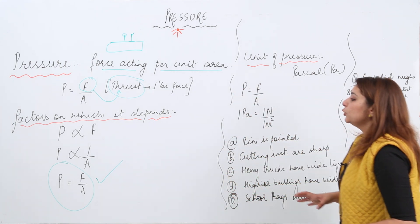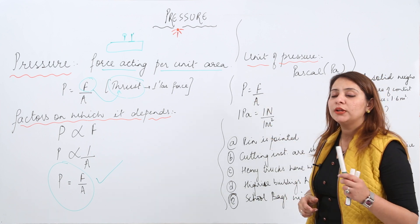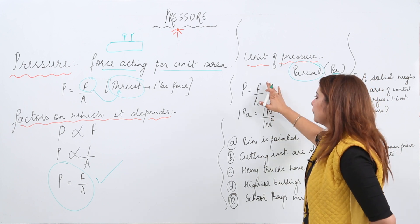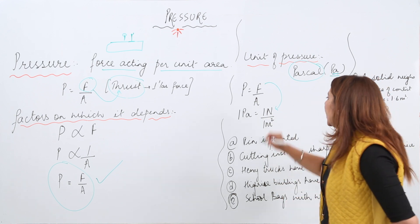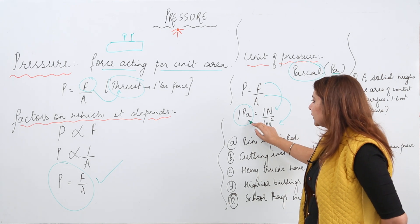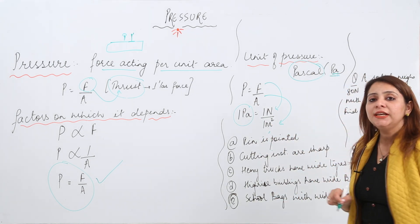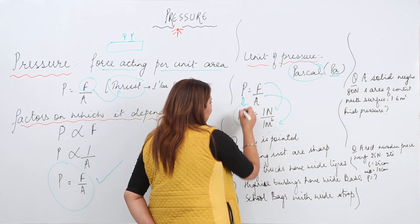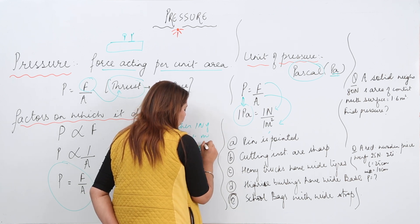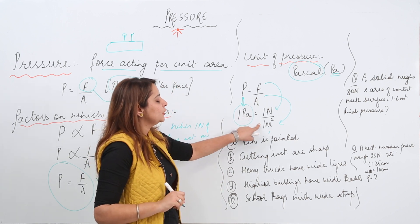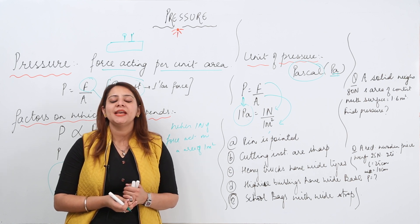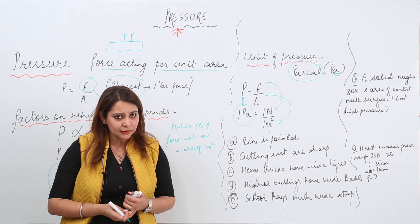The unit in which pressure is measured is Pascal, written as Pa. The SI unit of force is Newton and area is meter square, so 1 Pascal equals 1 Newton per meter square. We can define 1 Pascal as the pressure when 1 Newton of force acts on an area of 1 meter square. If a question asks what physical quantity is signified by Newton per meter square, the answer is pressure, equal to 1 Pascal.